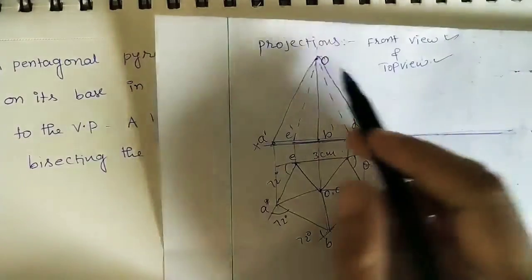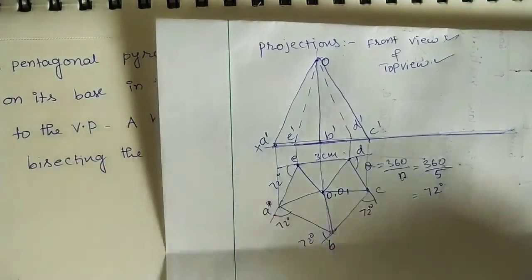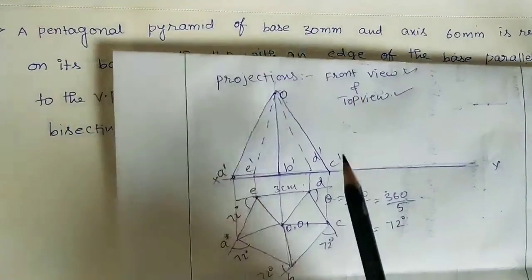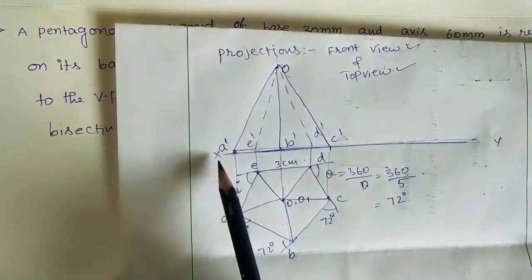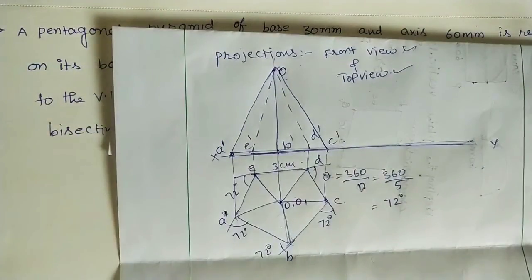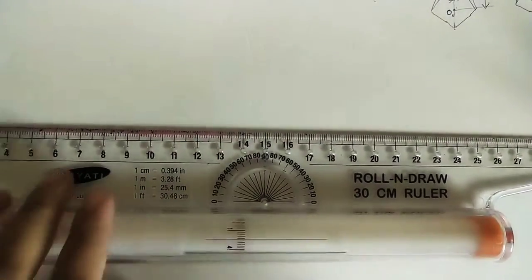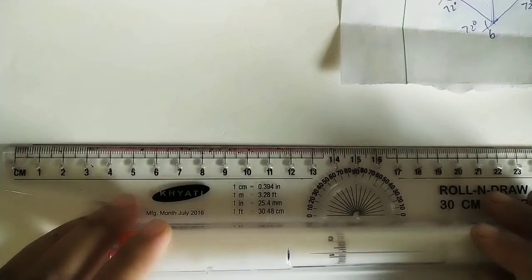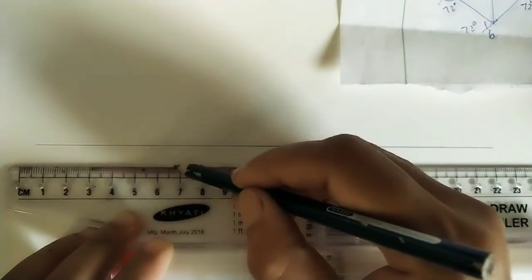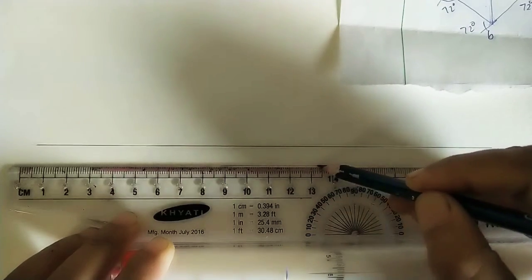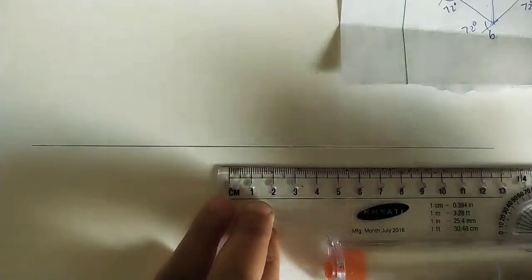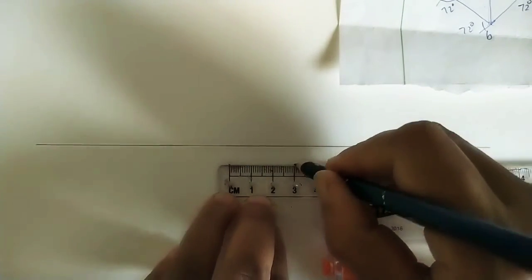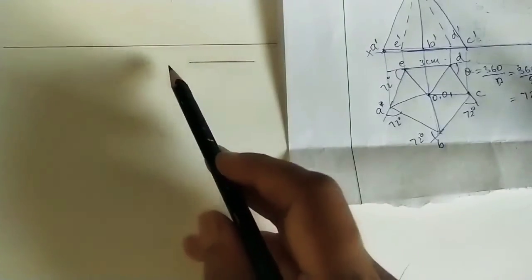Now let us do the actual drawing on the sheet. Draw a horizontal XY reference line of some length. Take any gap and draw a 30mm line parallel to this reference line. Mark the endpoints and make it dark. Then take 72° angles on both sides of this line to construct the pentagon.